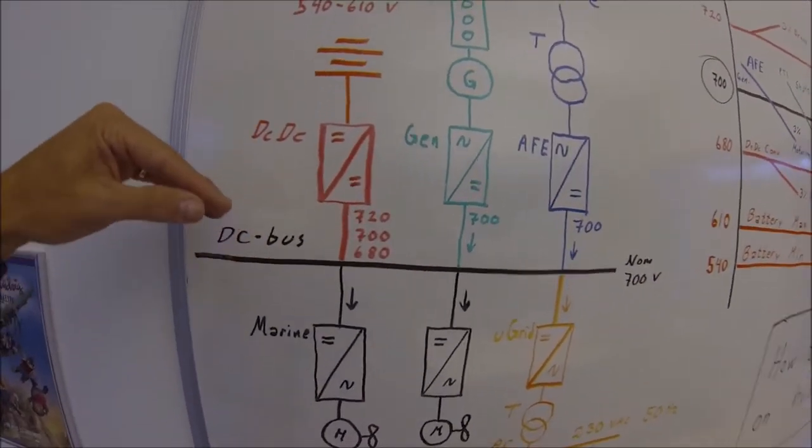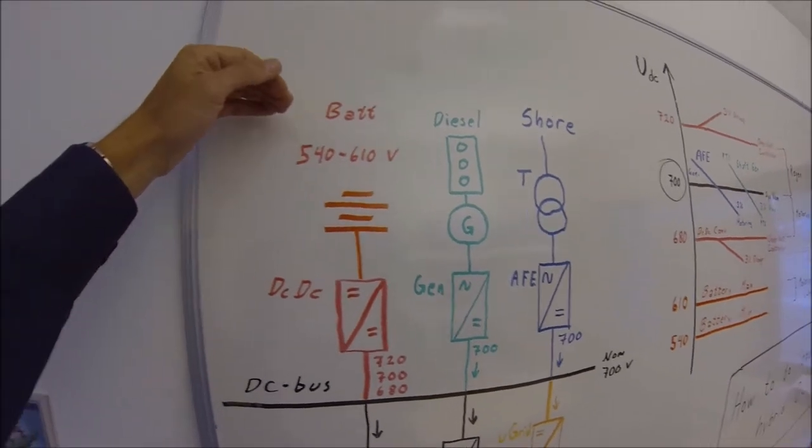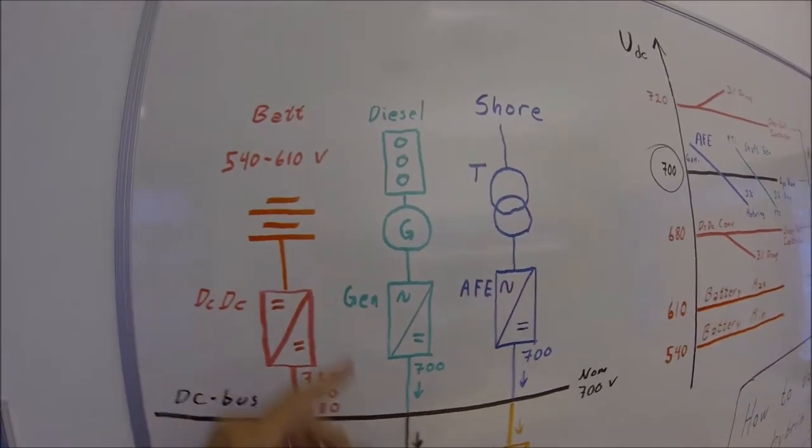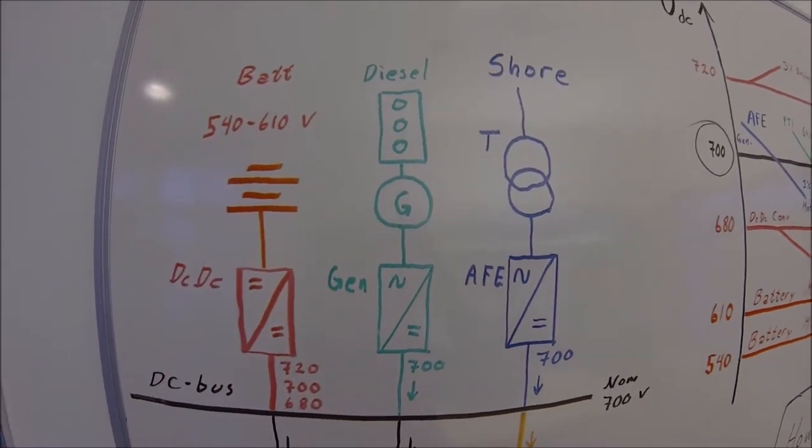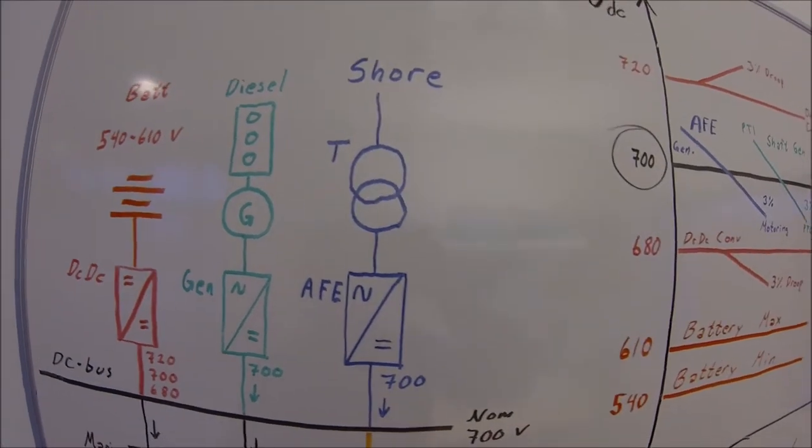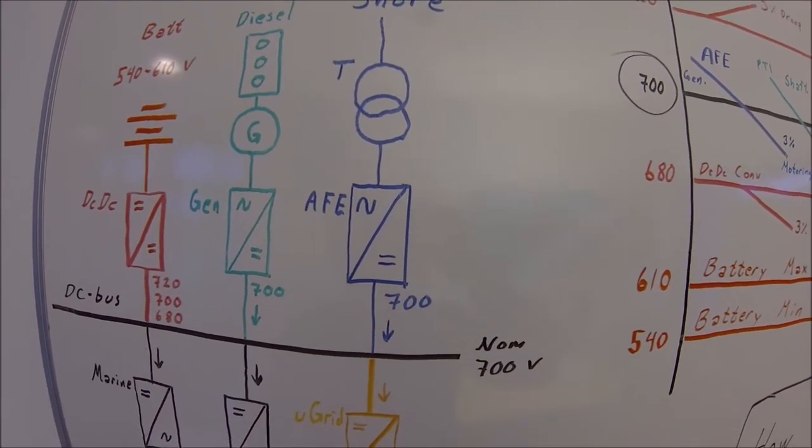Feeding into this DC bus, you have energy sources from energy storage, a battery. There is diesel generator, probably variable speed and frequency. You have a shore connection, like a charger.